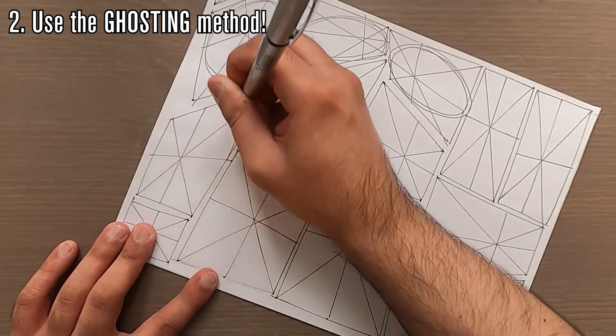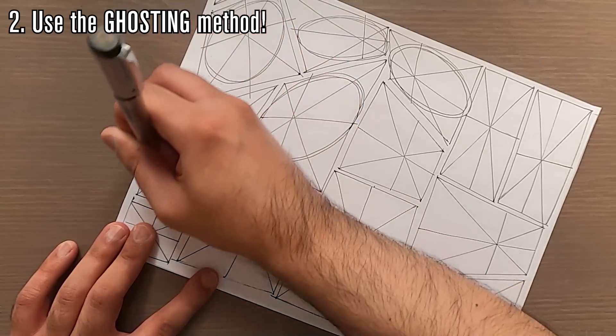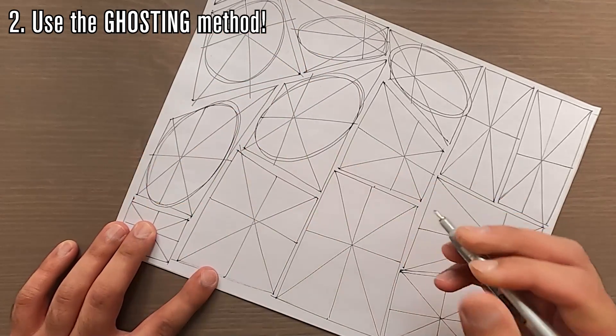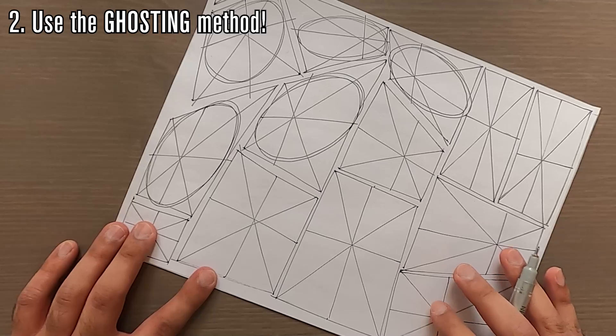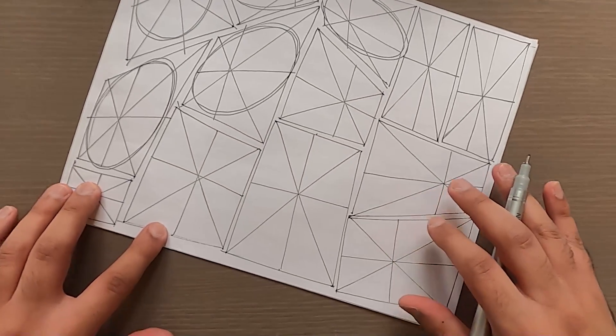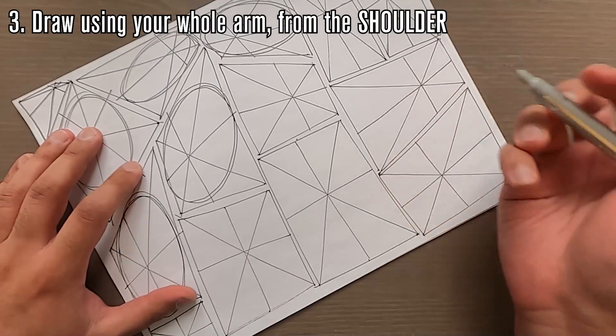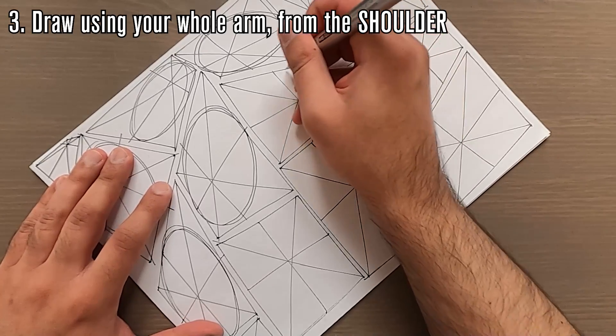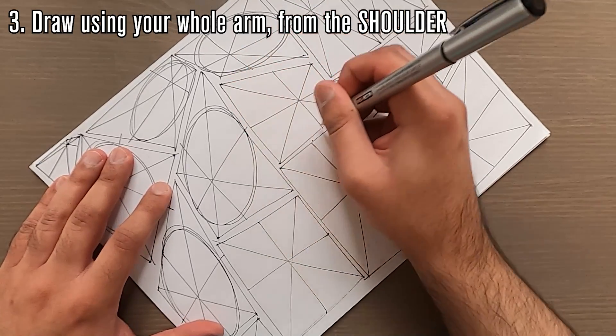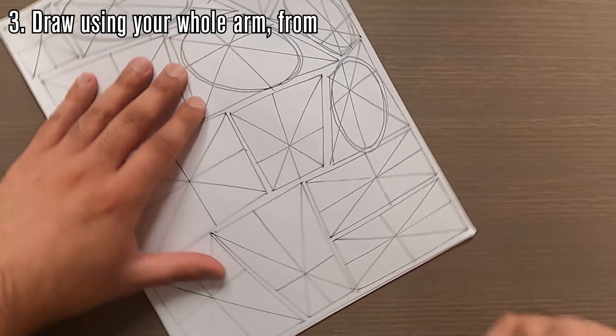Secondly, using the ghosting method will help us improve our control and accuracy without sacrificing the confidence of the execution. And thirdly, as always, we're drawing with our whole arm from the shoulder to promote a nice smooth flow to the stroke, even for smaller ellipses.